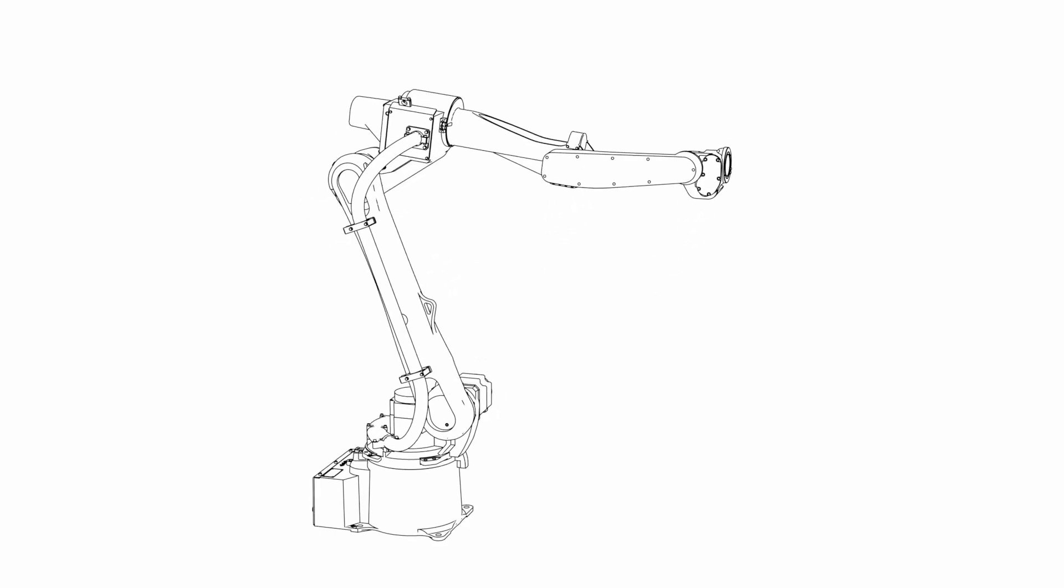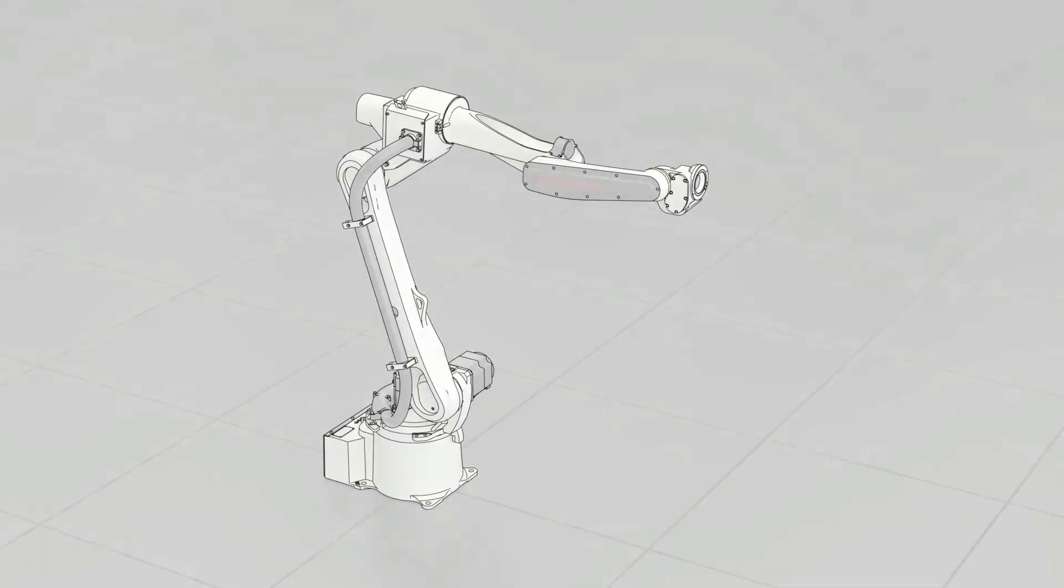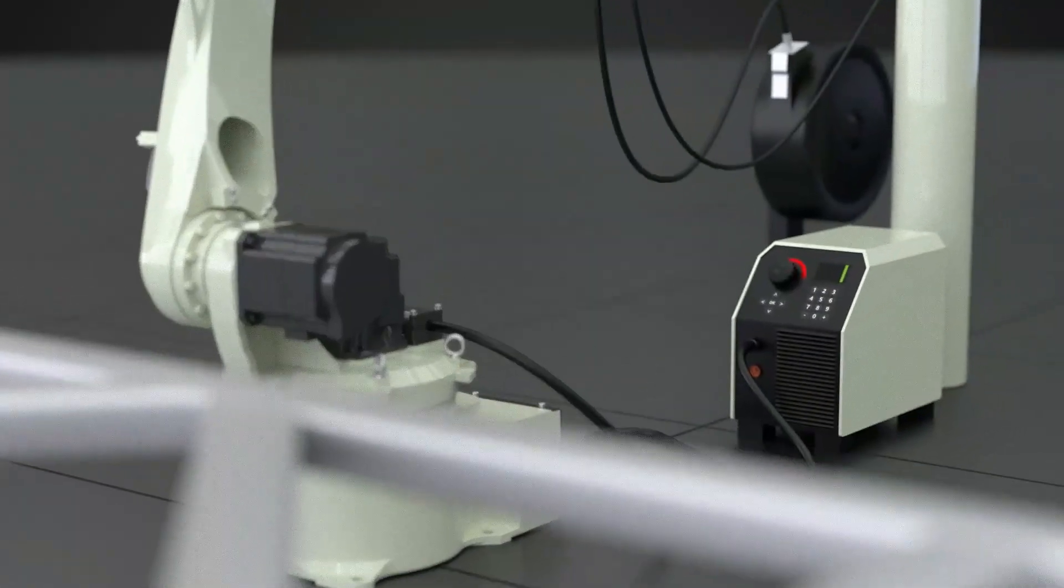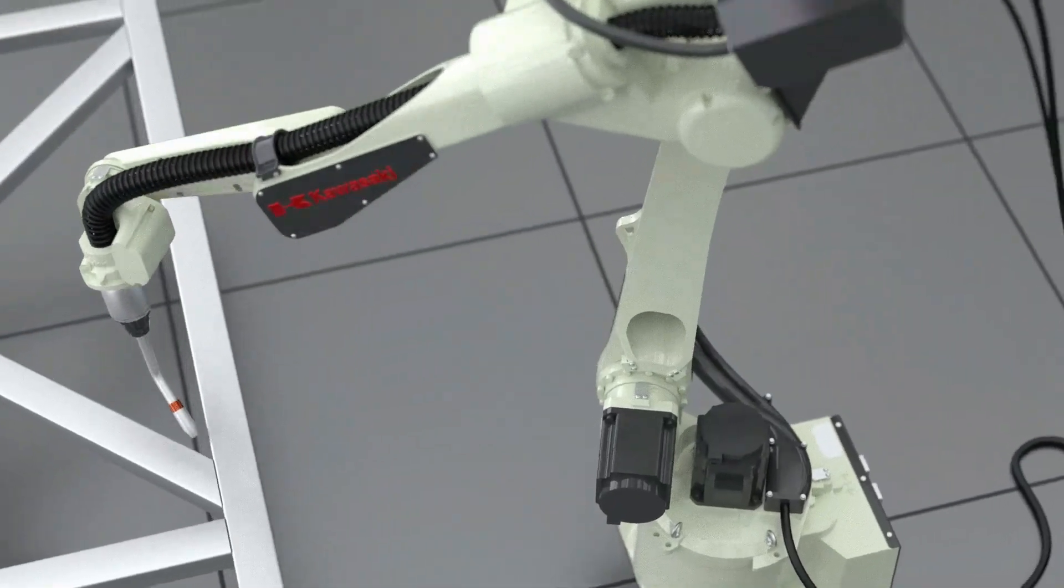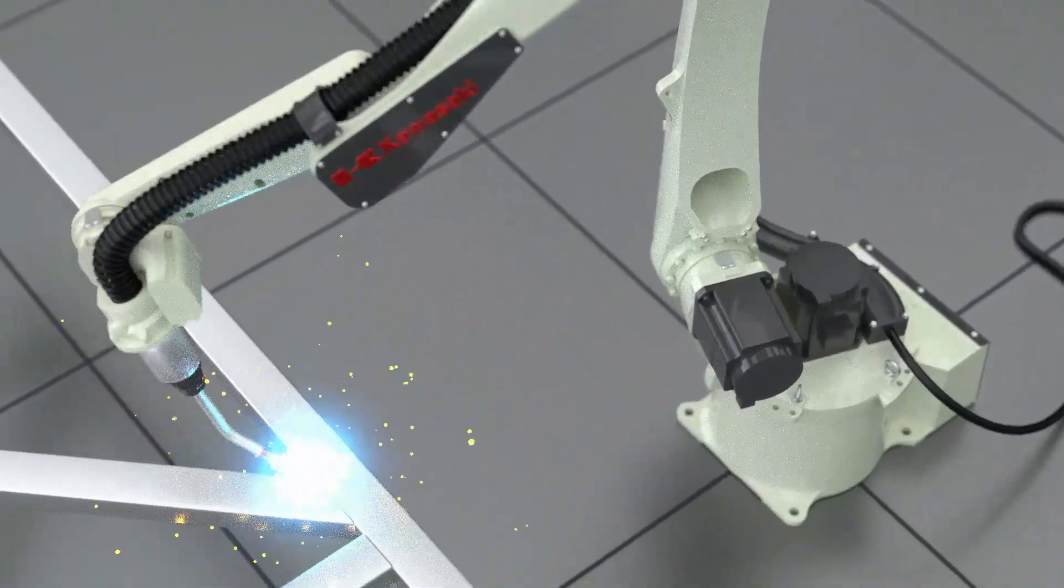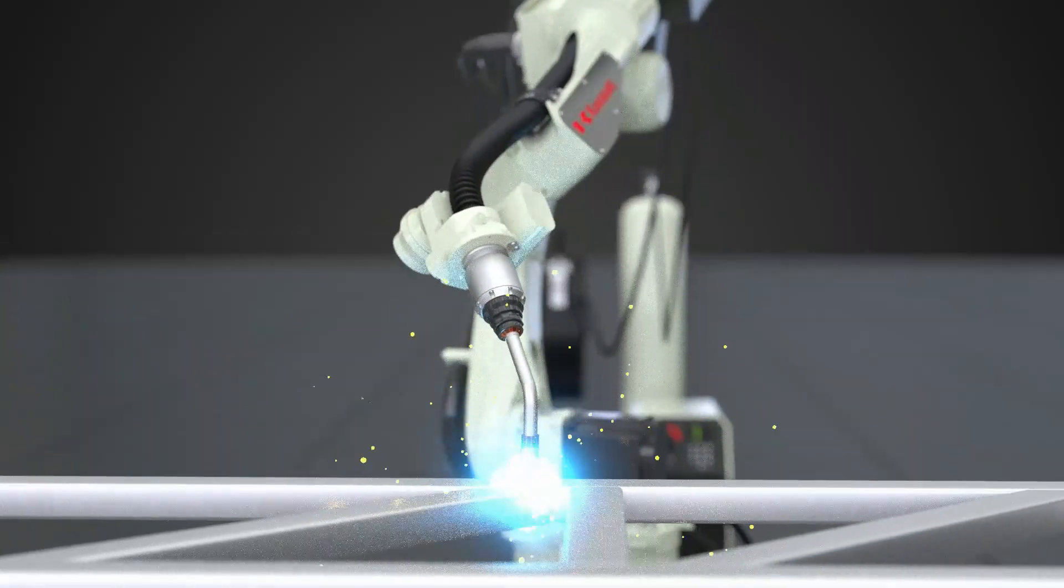We introduce the Kawasaki Robotics BA-6L. The arc welding robot uses state-of-the-art technology to achieve maximum quality and flexibility at all times.